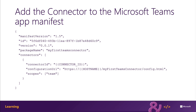Define your connector in the app manifest by adding it to the connectors property and include the following properties: the connector ID, which is the unique ID obtained when you register it in the connectors developer dashboard; the configuration URL, which is the fully qualified URL where the configuration page is hosted; and scopes, which should be set to teams.